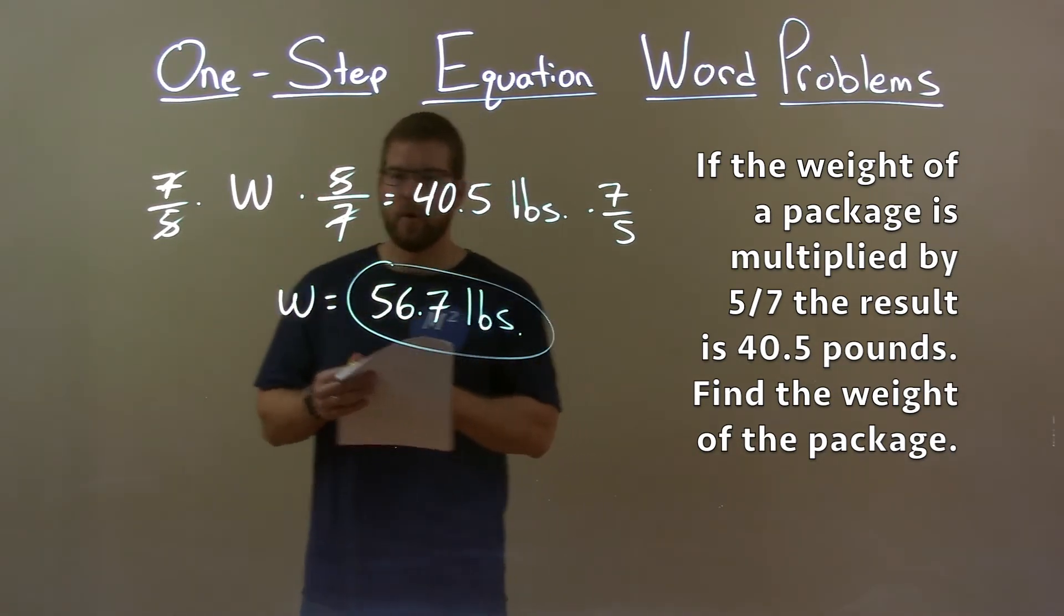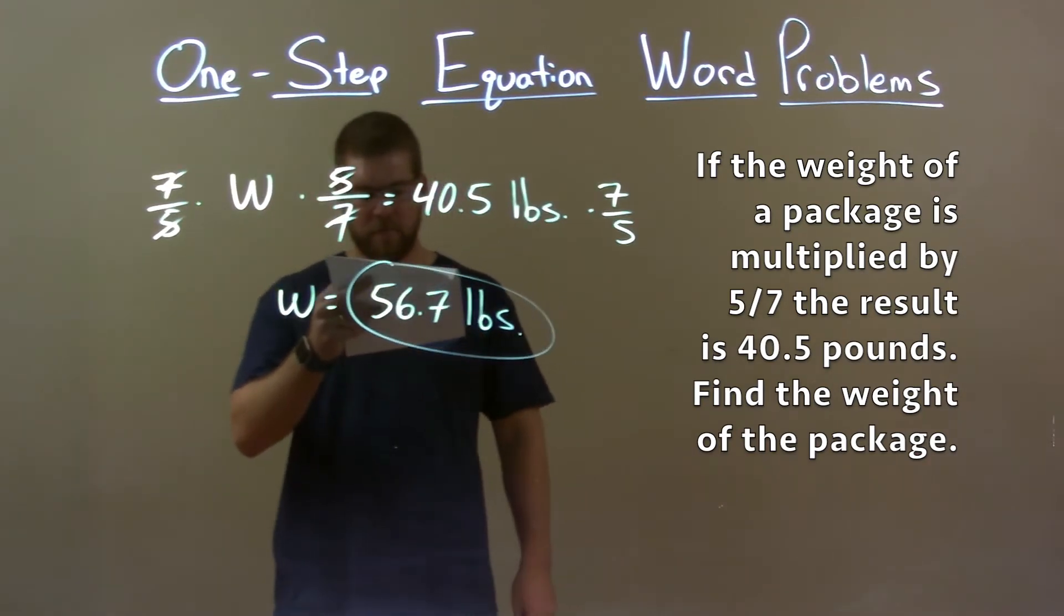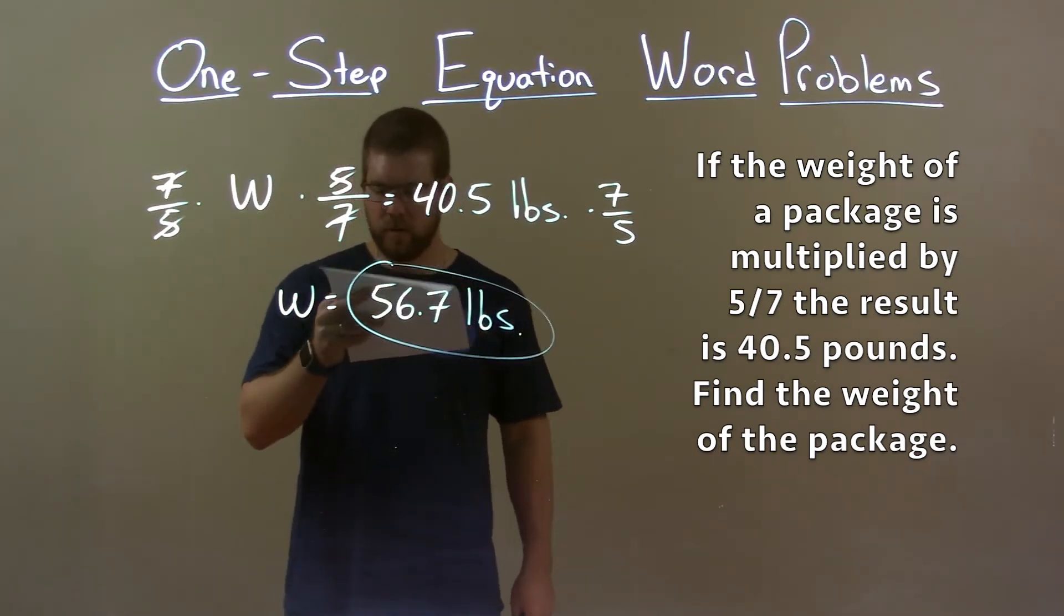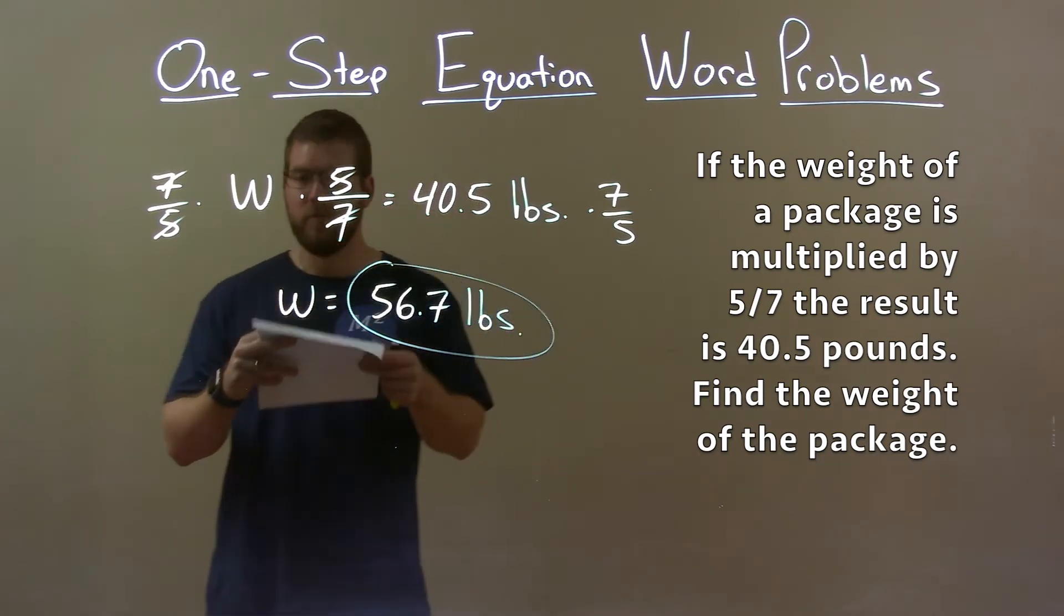Quick recap, we're given the word problem. If the weight of a package is multiplied by five-sevenths, the result is 40.5 pounds. Find the weight of the package.